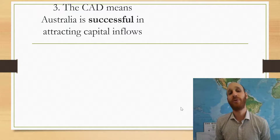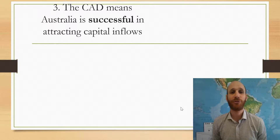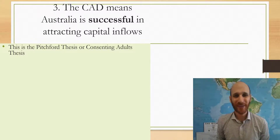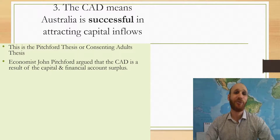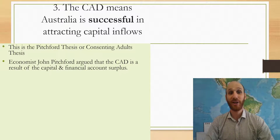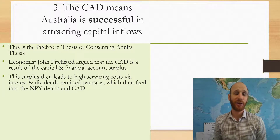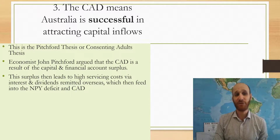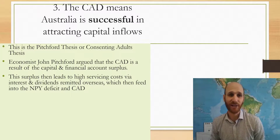A final view of the CAD is that the current account deficit means that Australia is successful in attracting capital inflows. This is the Pitchford thesis, or the consenting adults thesis. Australian economist John Pitchford argued that the current account deficit is the result of the capital and financial account surplus — going back to the basic relationship between the two accounts. This surplus leads to high servicing costs via the interest and dividends paid overseas, which then increases the NPY deficit and the current account deficit.